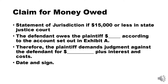Here's a complaint for money owed. Statement of jurisdiction: if it's $15,000 or less in state justice court, that's where you're going to file it; if it's more than $15,000, you're going to file it in district court. The defendant owes the plaintiff X number of dollars according to the account set out in Exhibit A. Include this exhibit if you're trying to establish your damages — that's going to be the account. Therefore, the plaintiff demands judgment against the defendant for X dollars plus interest and costs. You're going to date it and sign it, and that's your complaint. Keep it simple.